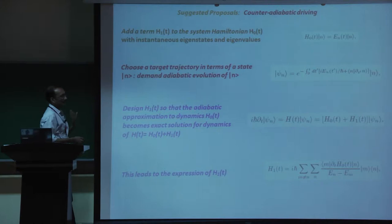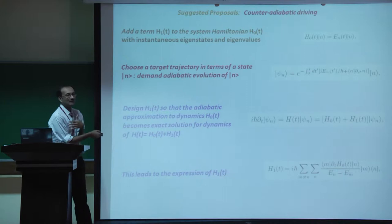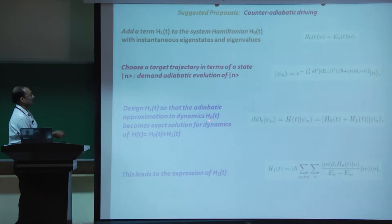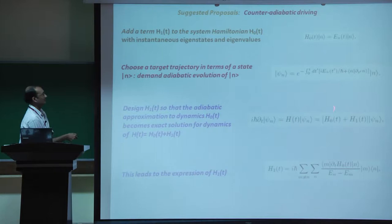So you add a Hamiltonian term H_1 so that the Schrödinger equation is satisfied. Starting from here and knowing the instantaneous eigenvalues and eigenvectors of H_0, one can show that H_1(t) is given in terms of the matrix element of the time derivative of H_0(t) between two eigenstates m and n, divided by their instantaneous energy difference.